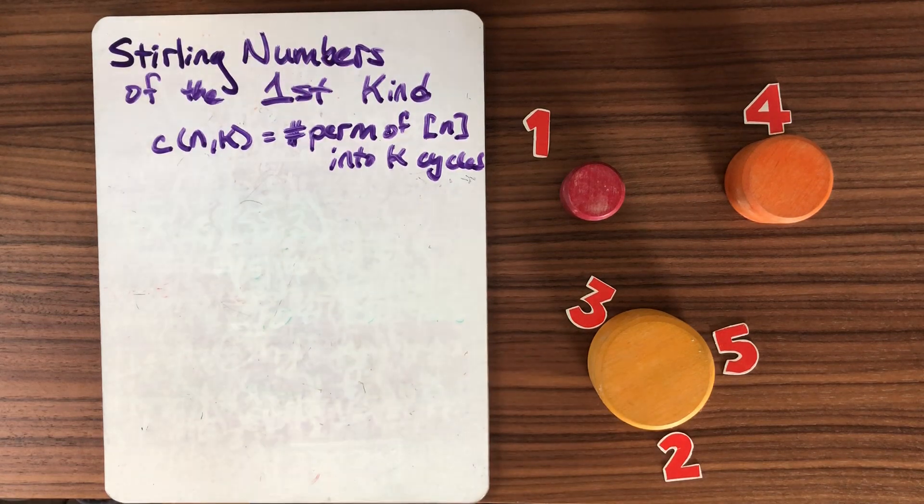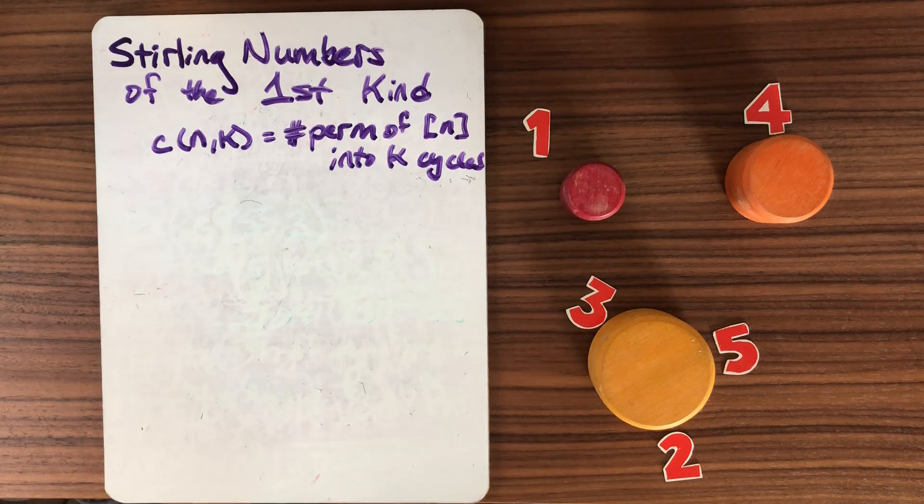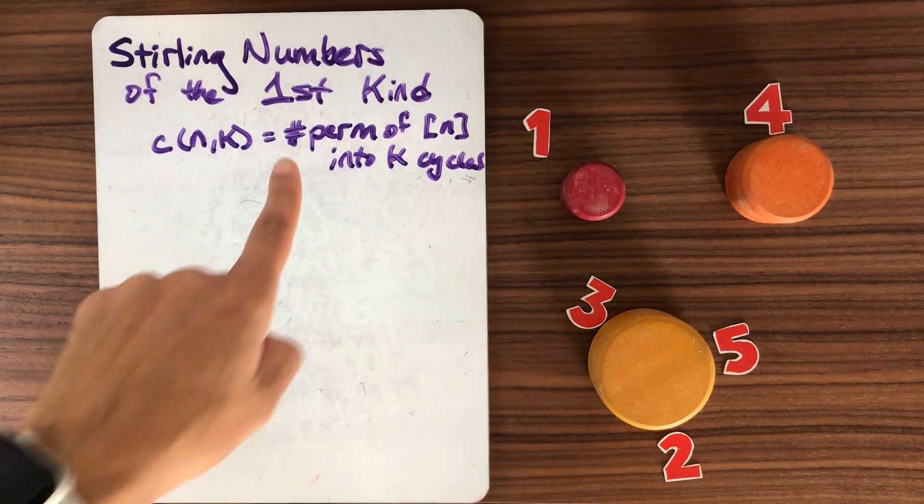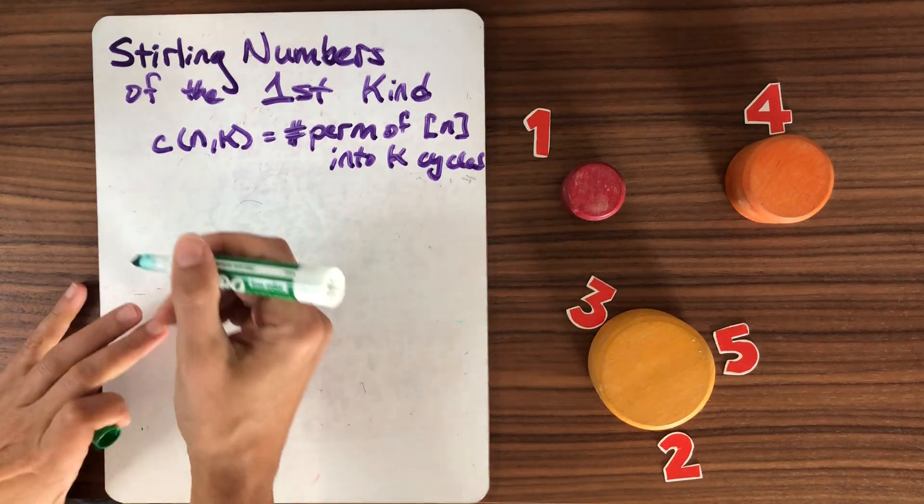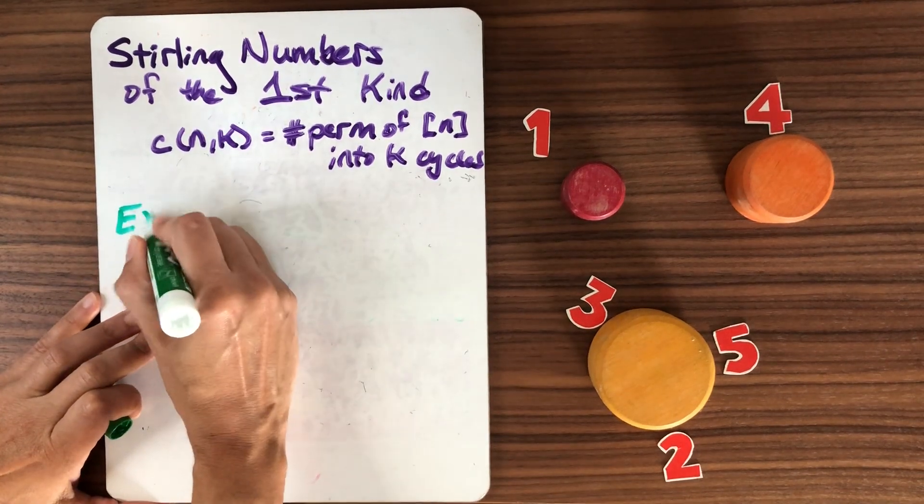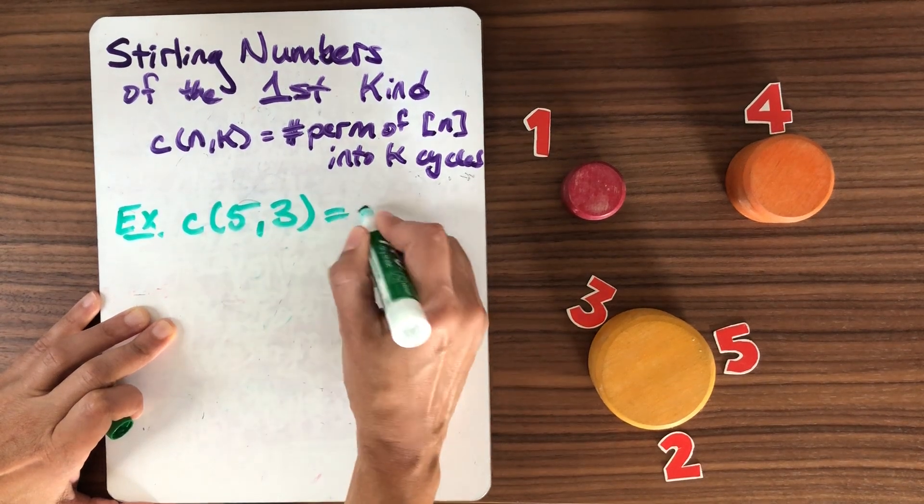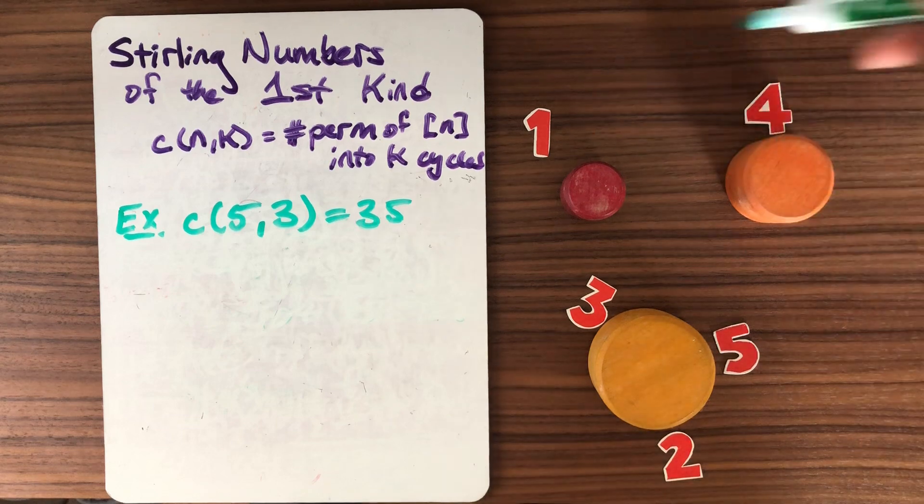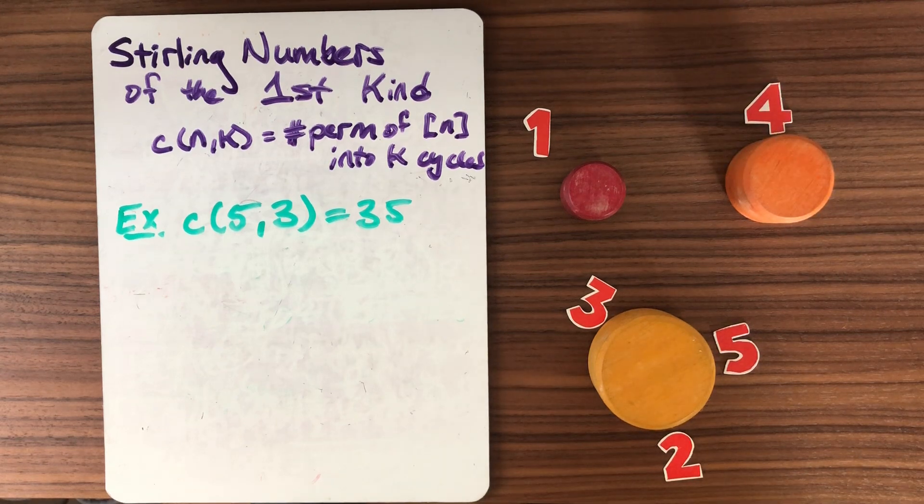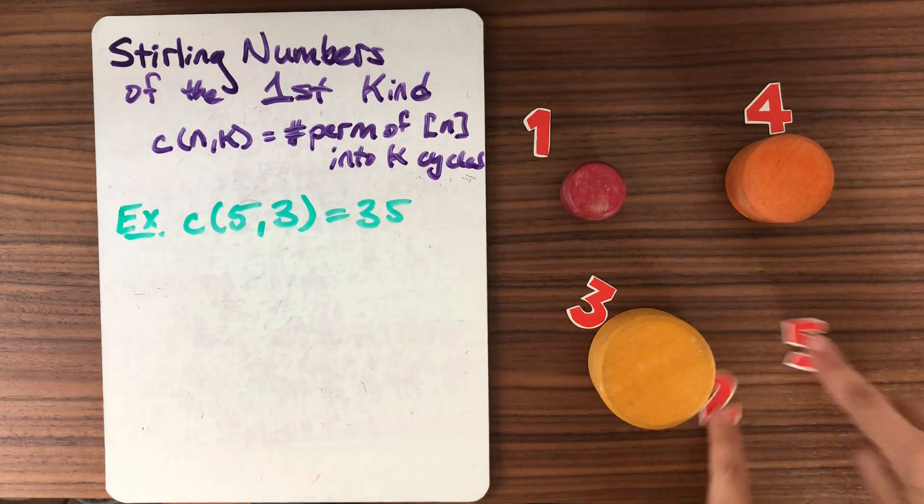One of the things that we've looked at before are the Stirling numbers of the first kind. This is the signless variation. C(n,k) is the number of permutations of n into k cycles. For example, over here I have one of the 35 possibilities for C(5,3), which is taking three cycles and putting the numbers 1 through 5, arranging them in a cycle. And because it's a cycle, there's a difference between this and this.